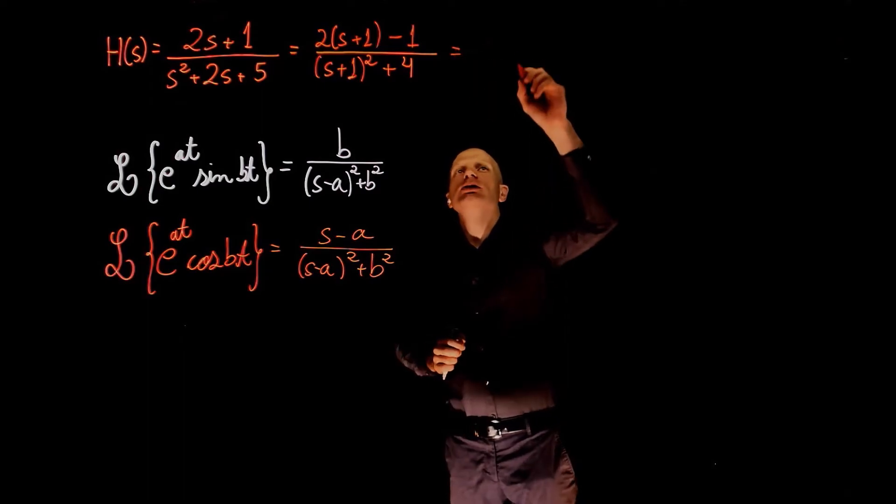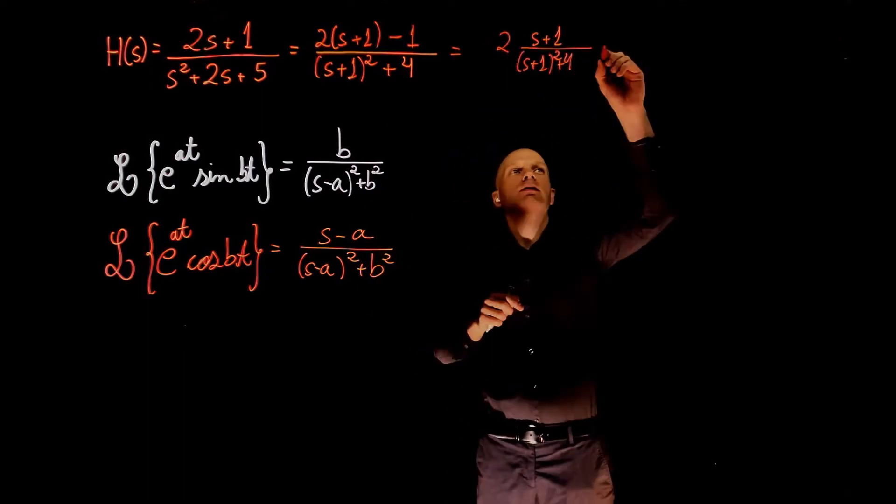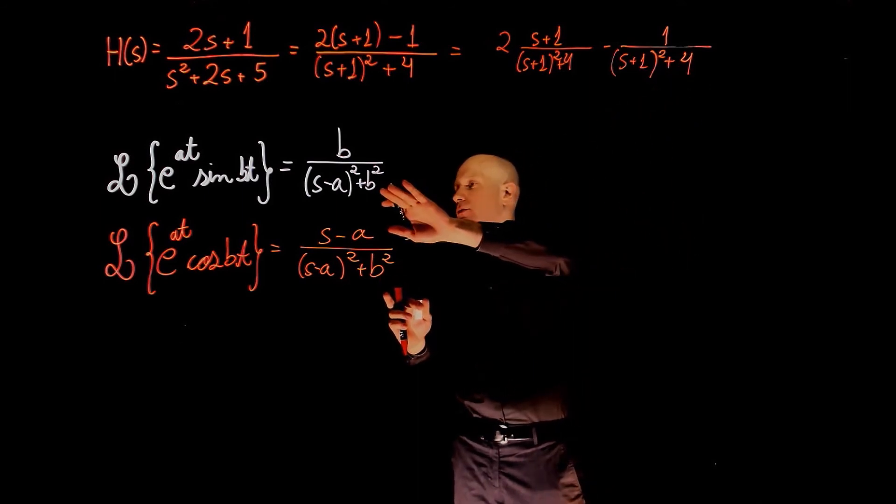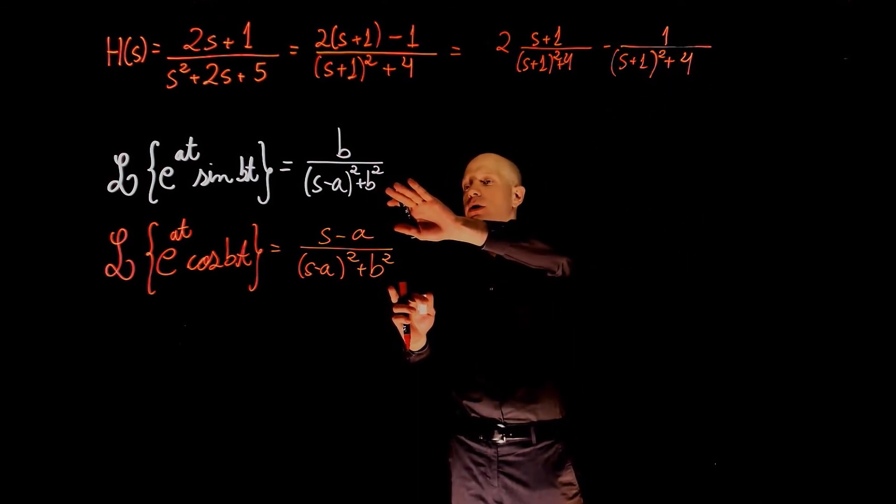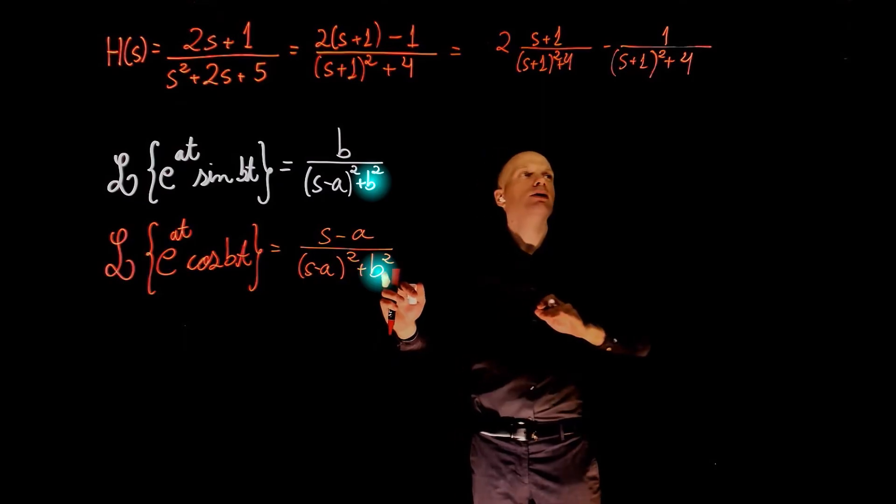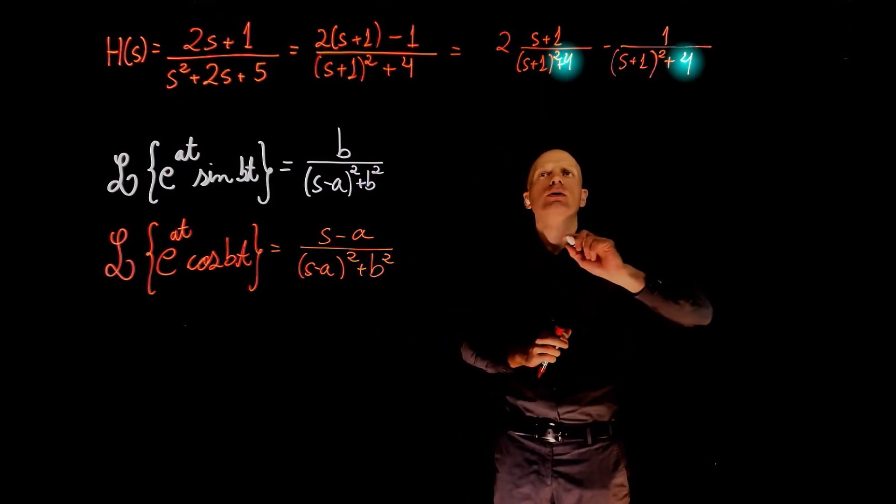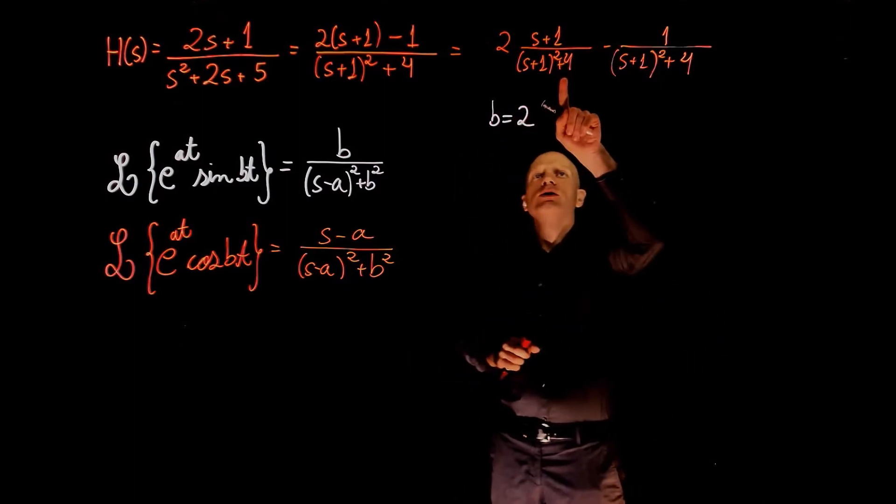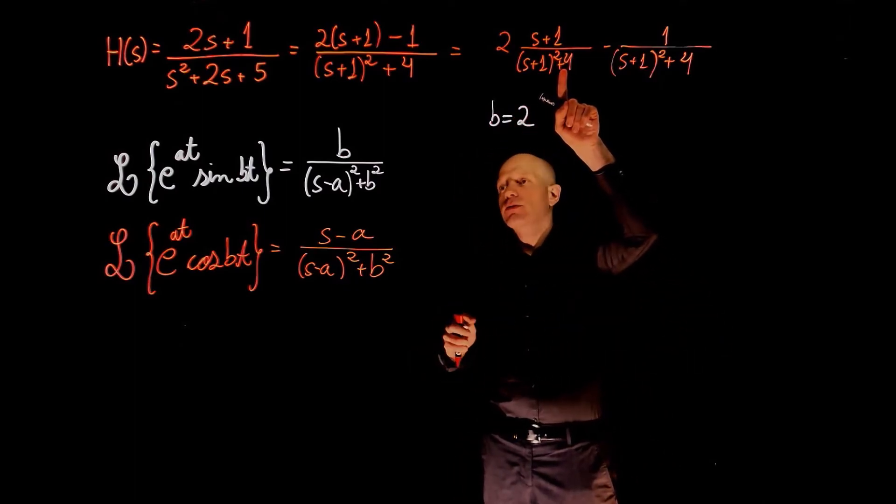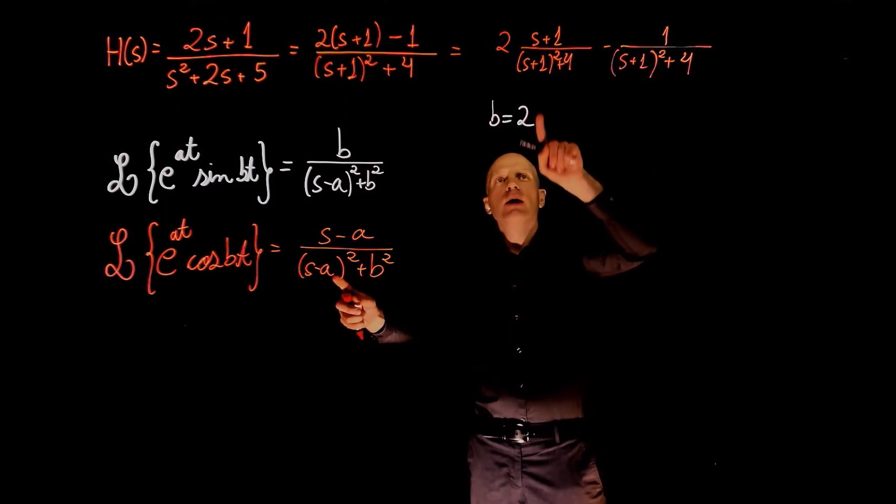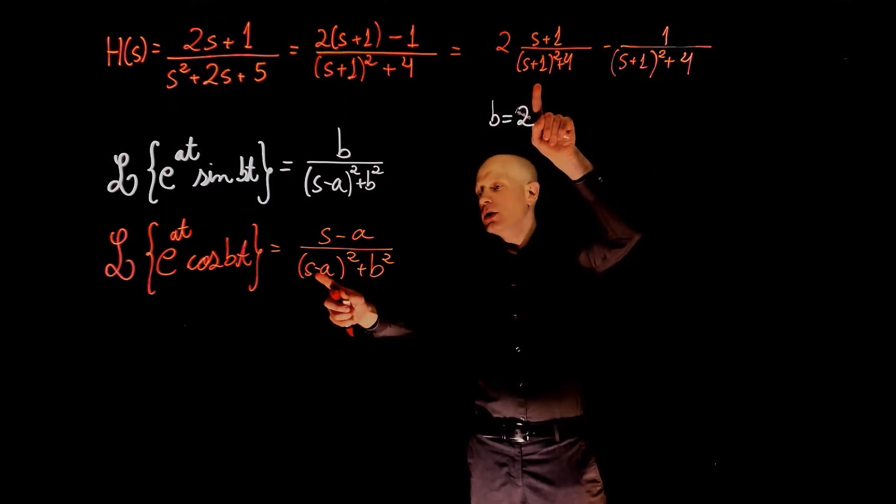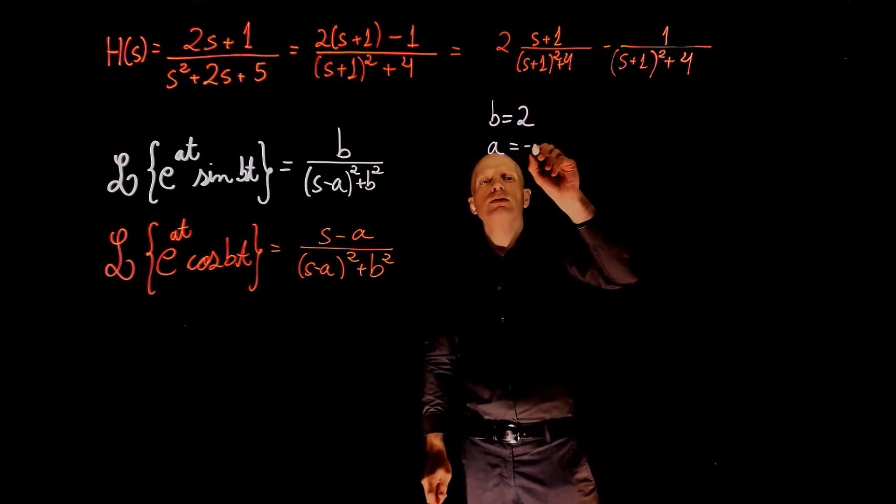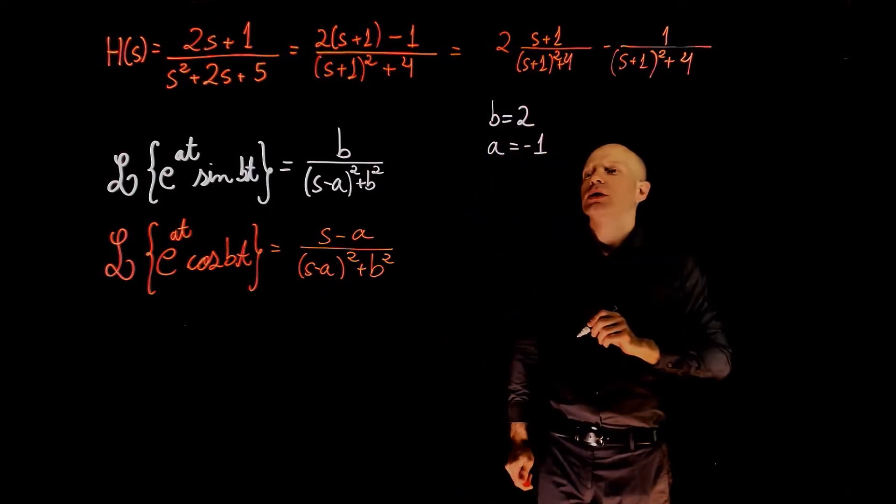We can expand this equation. If you compare now these equations with the inverse Laplace that we have here, we see that the constant in the denominator b squared equals to 4. So b equals to 2. We can now take the inverse of this. This will fall into this category and we have s plus 1. Here we have negative a. Negative a is equal to 1, so a equals to negative 1.